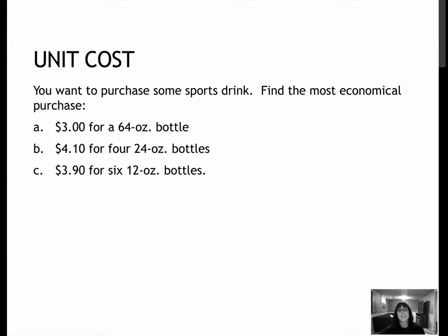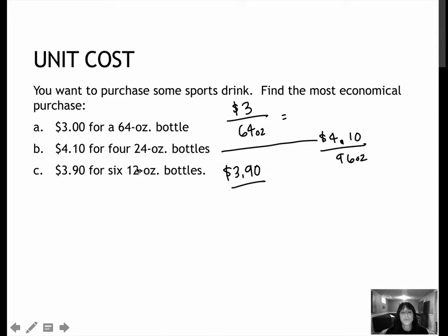I am thirsty and need some electrolytes, and I want the most economical purchase for these different options. It makes sense that we're finding price per ounce rather than ounce per price. So that's how we will set up each of these rates to find our unit cost. The first one would be $3 for 64 ounces. The second one would be $4.10 for four 24-ounce bottles, so 24 times 4 would be 96 ounces. And then this one would be $3.90 for six 12-ounce bottles, 6 times 12 to get 72 ounces.